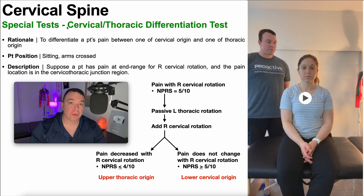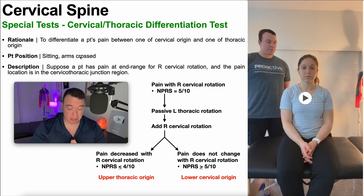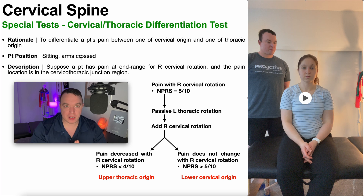To perform the Cervical Thoracic Differentiation Test, the patient is going to be positioned in sitting with their arms crossed. Having the arms crossed is not as important in the first part of the test when we're just doing neck rotation, but once we combine in some thoracic rotation, we do want to have the arms crossed.